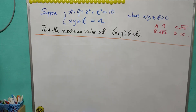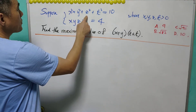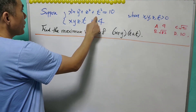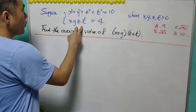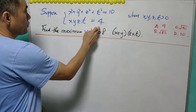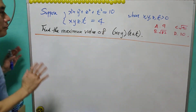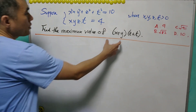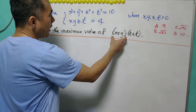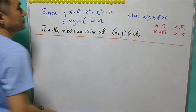For this question, we suppose that x² + y² + z² + t² = 10 and the product of x, y, z, t equals 4, where all x, y, z, and t are positive real numbers. We are asked to find the maximum value of the expression (x + y)(z + t).